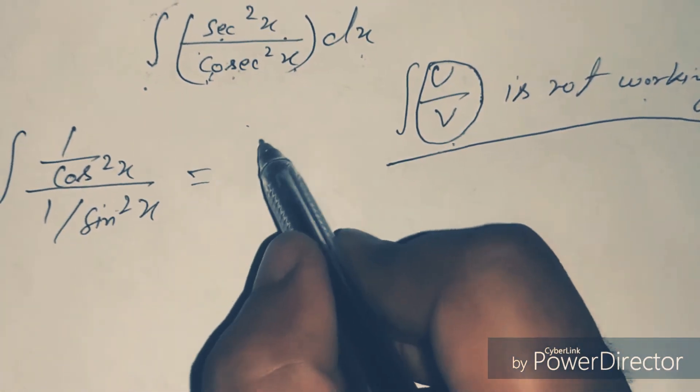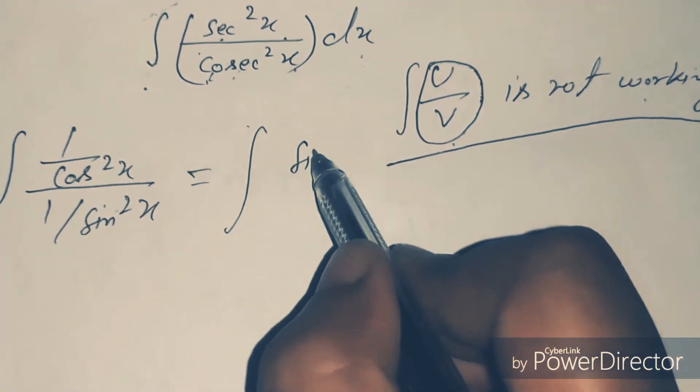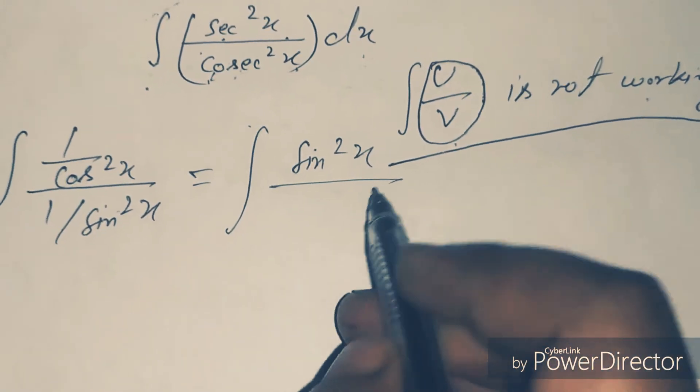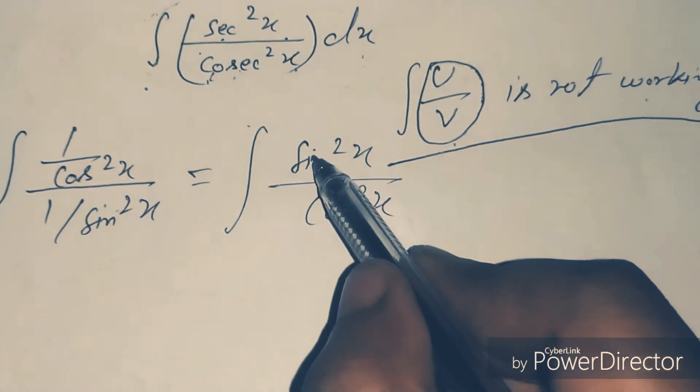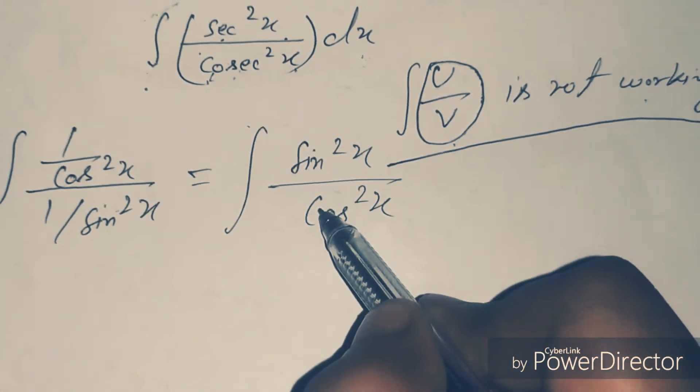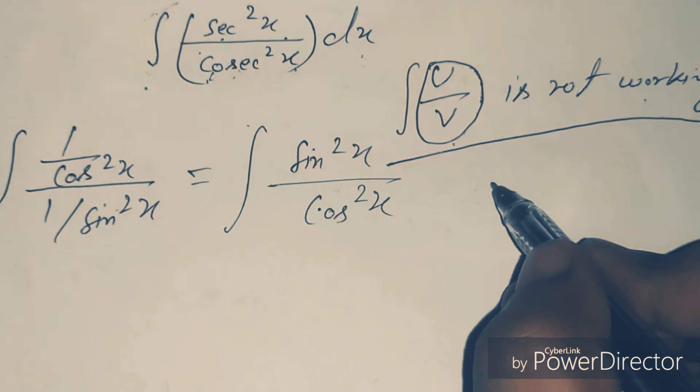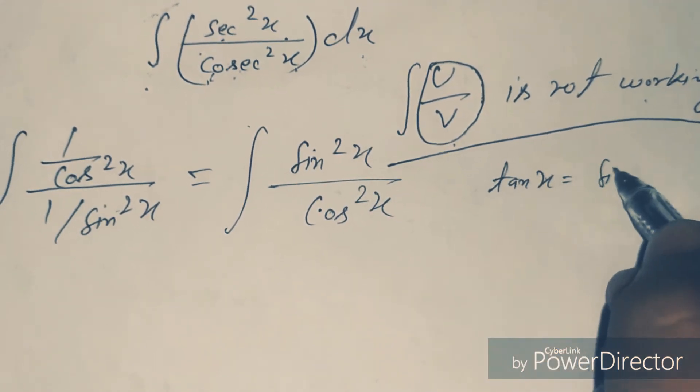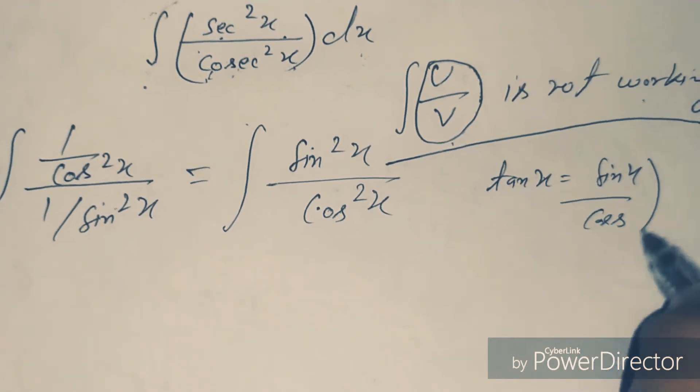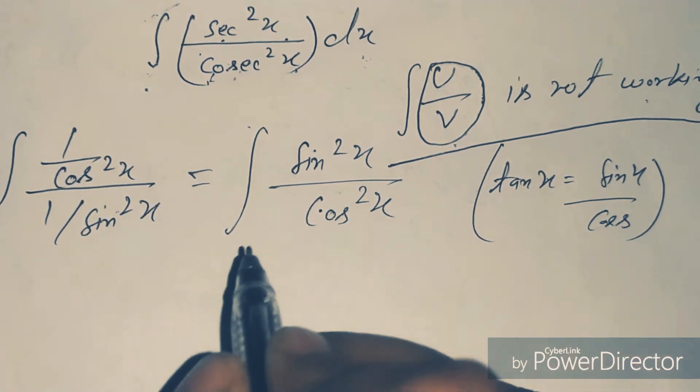Now that is equal to sin²x by cos²x, and that is equal to tangent. Because in trigonometry there is a formula: tan x is equal to sin x by cos x. This formula also implements in this equation.